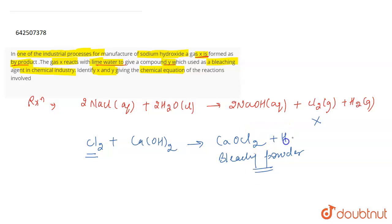This gas X, which is Cl2, reacts with lime water or is passed through lime water and leads to the formation of compound Y, which is known as bleaching powder.